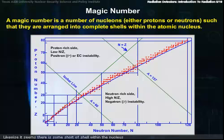Likewise, it seems there's some sort of shell within the nucleus that produces a lower energy ground state, making the nuclides exceptionally stable. These magic numbers are 2, 8, 20, 28, 50, and 82.